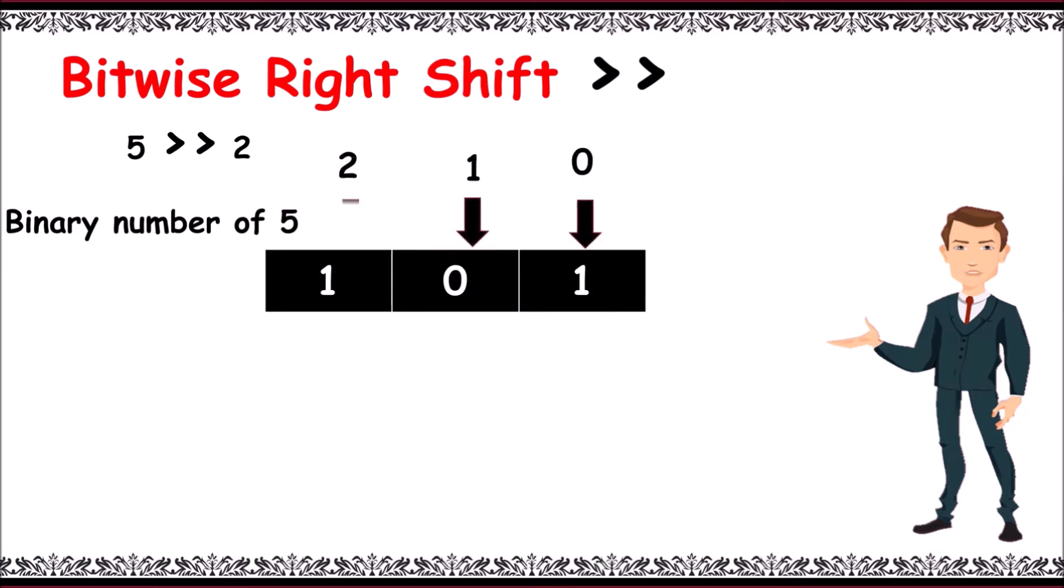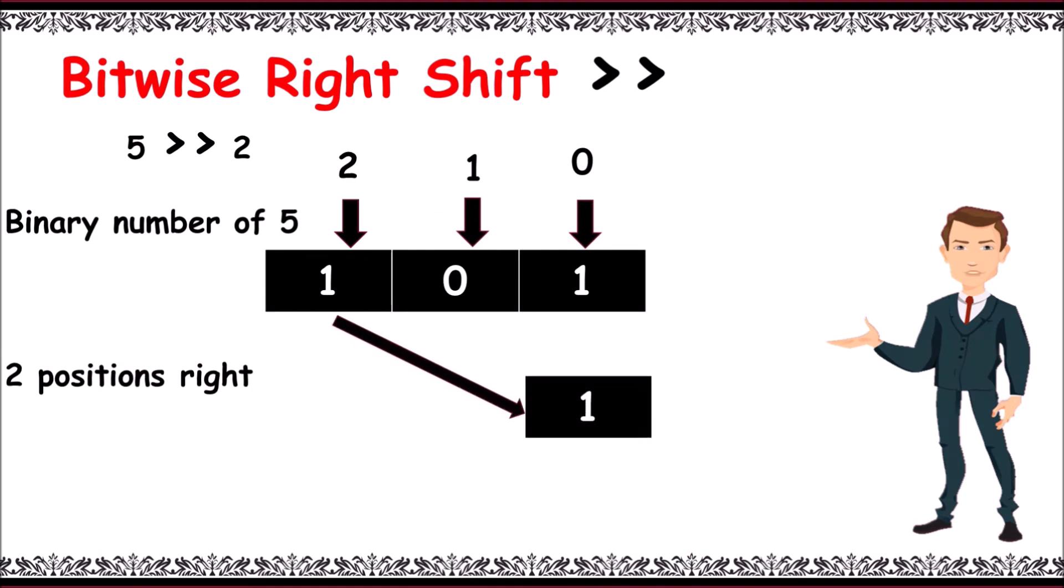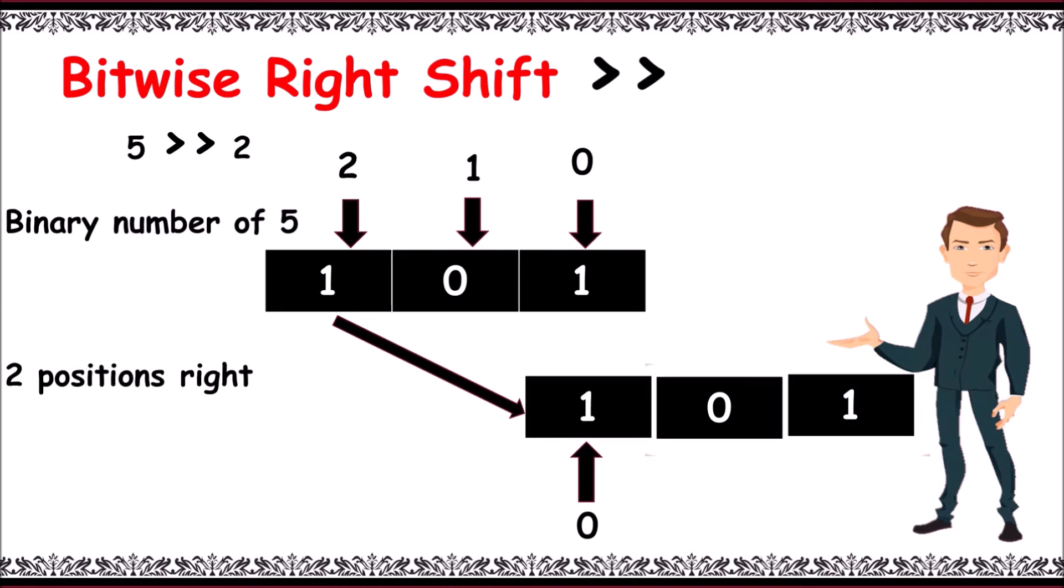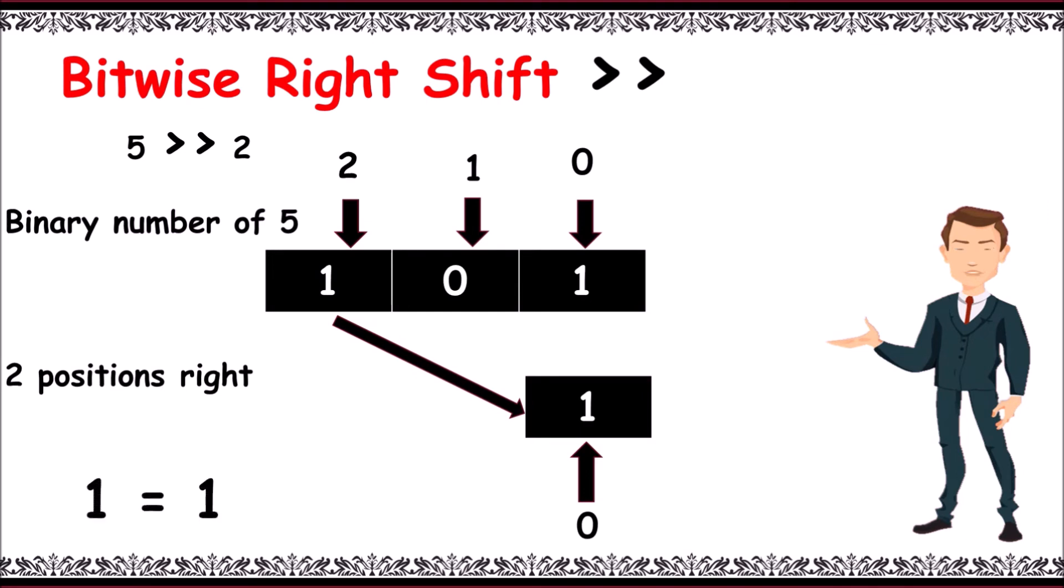We need to shift all bits towards right for two positions. What about positions that are right after the 0th position? Simple, they get deleted. The answer will be the remaining bits, that is 1. The binary number of 1 is 1.